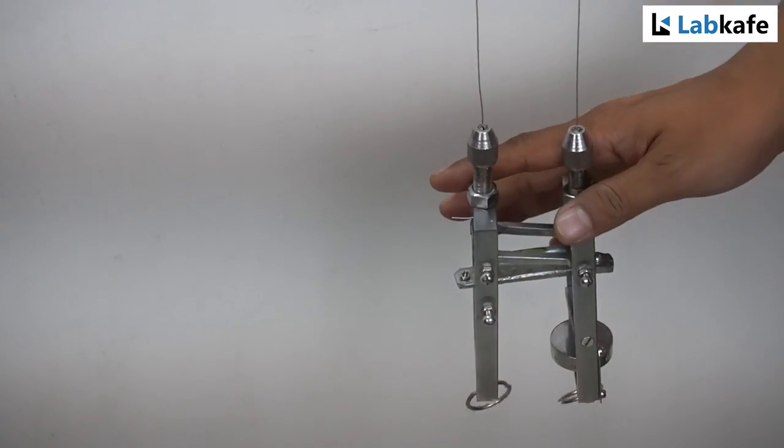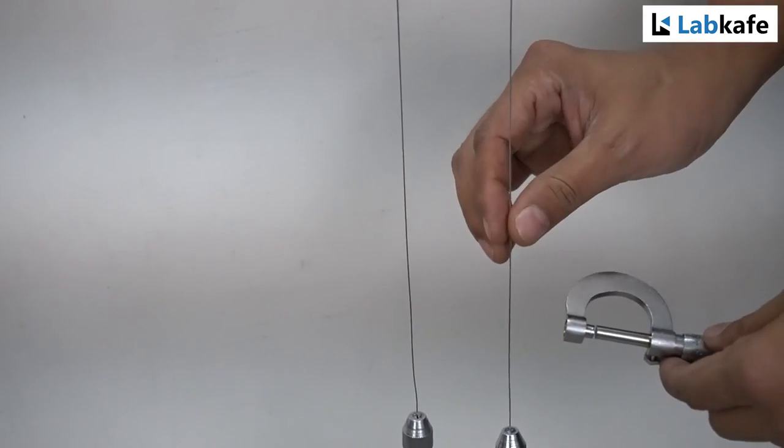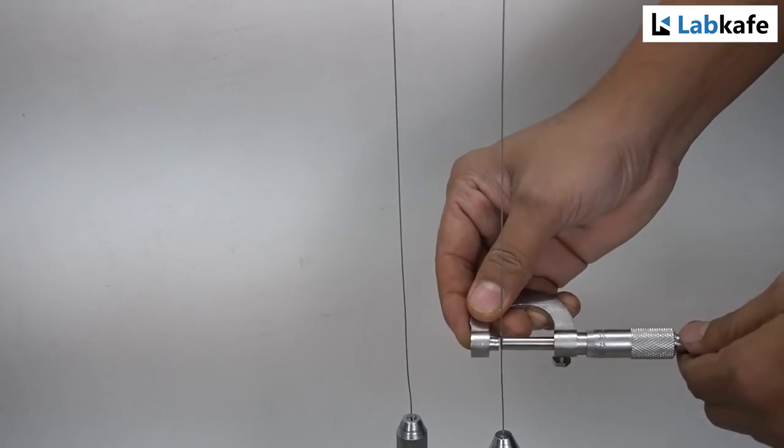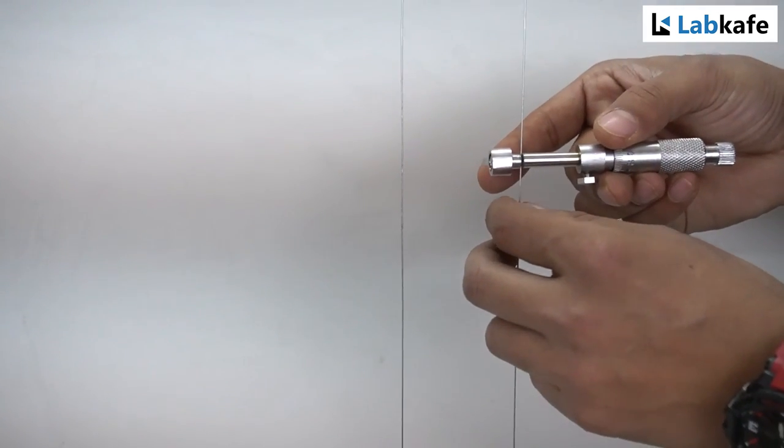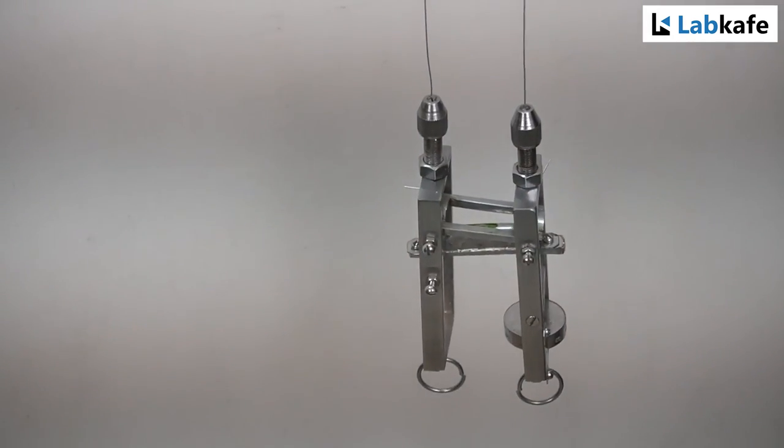Now, the apparatus is ready for the experiment. Once it is done, we have to measure the diameter of the wire in three different places using the screw gauge. I have taken one reading from here, one from here and one reading from here. The mean diameter is 0.053 centimeter.